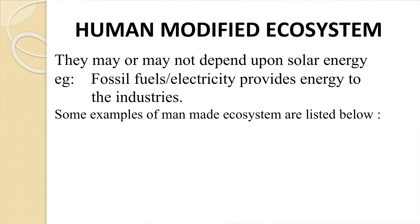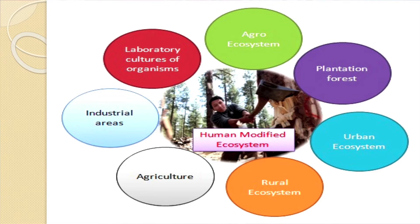Our first modified human ecosystem — we are going to list quite a few — but the foremost characteristic of such modified ecosystems is that they are not dependent upon solar energy. Instead, fossil fuel and electricity provide energy to the industries. The next slide shows you the various modified ecosystems: agro-ecosystem, plantation forest, urban ecosystem, rural ecosystem, agriculture and industrial areas.